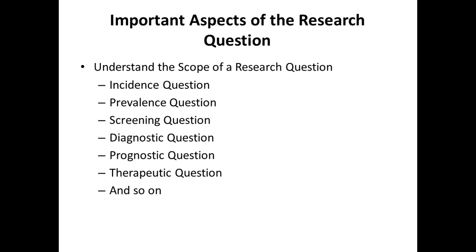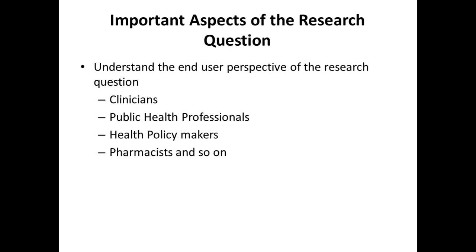The first aspect of the research question that needs to be understood is the scope. A research question may be an incidence question — we may be interested in finding the prevalence of a particular condition. It may be asking about the screening ability of a particular tool or body test, or it may be a diagnostic question, a prognostic question, a therapeutic question, and so on. We need to understand the scope of our research question, which will be covered in the next talk.